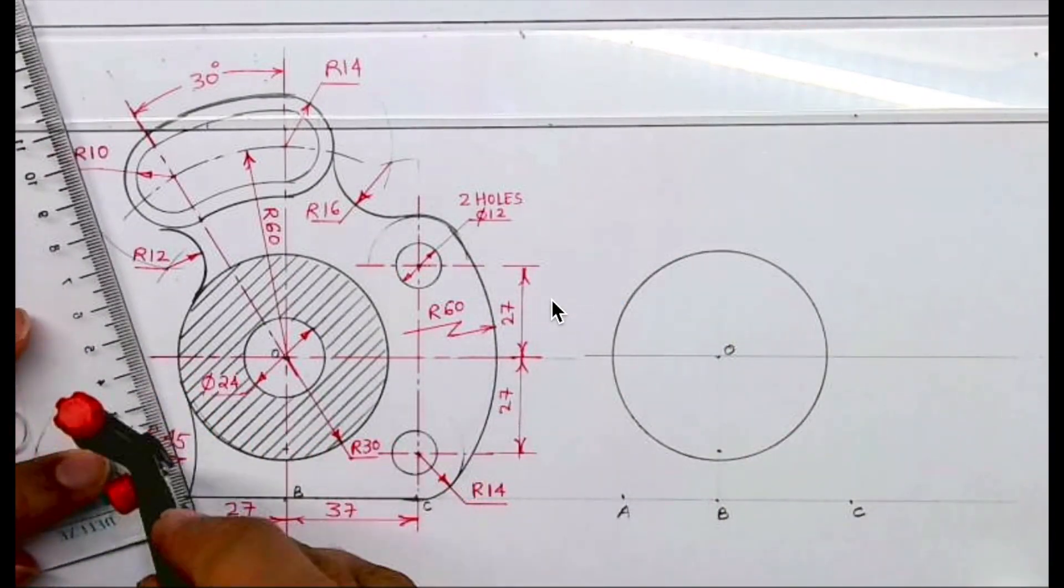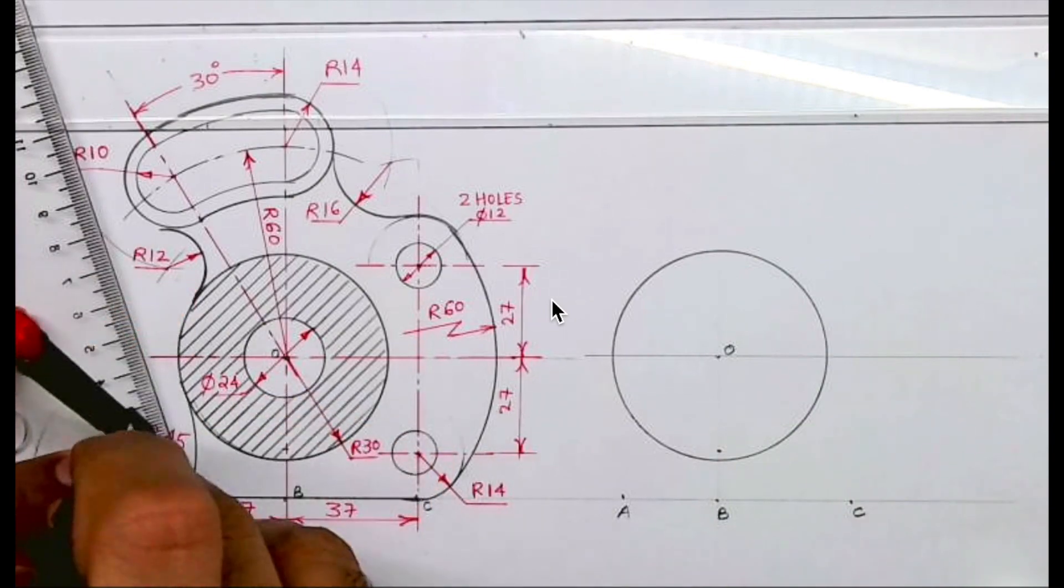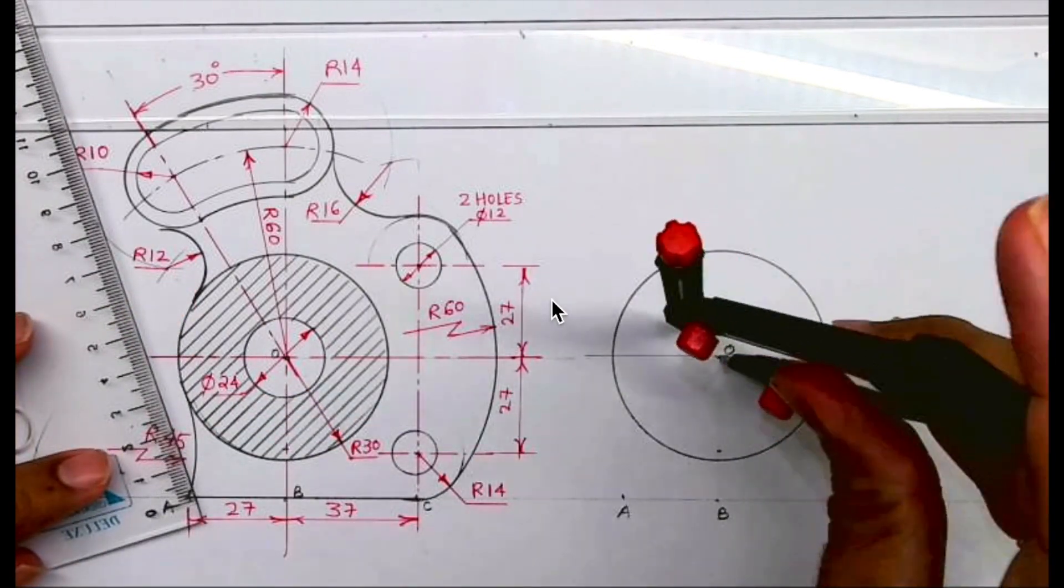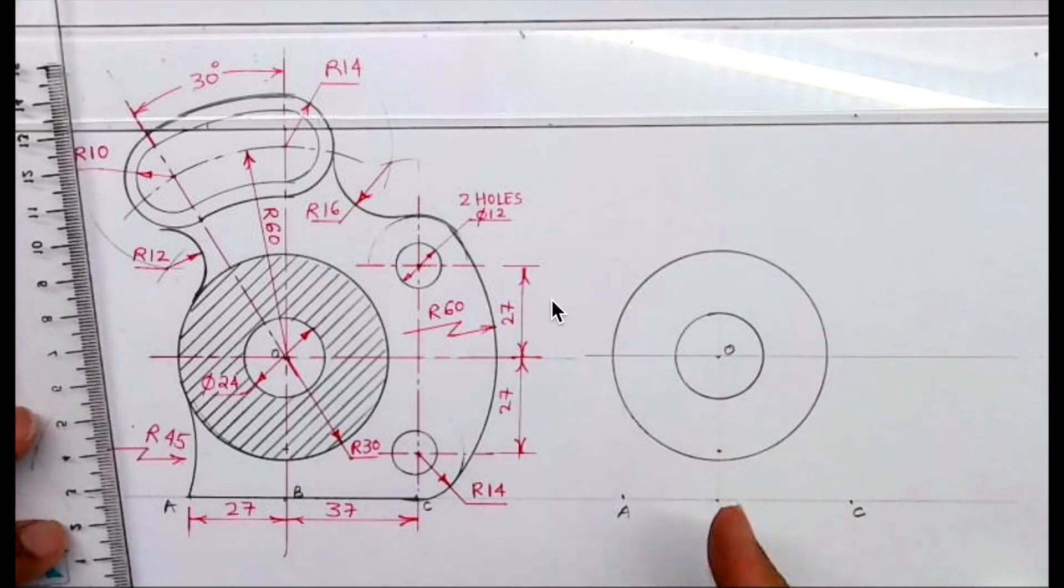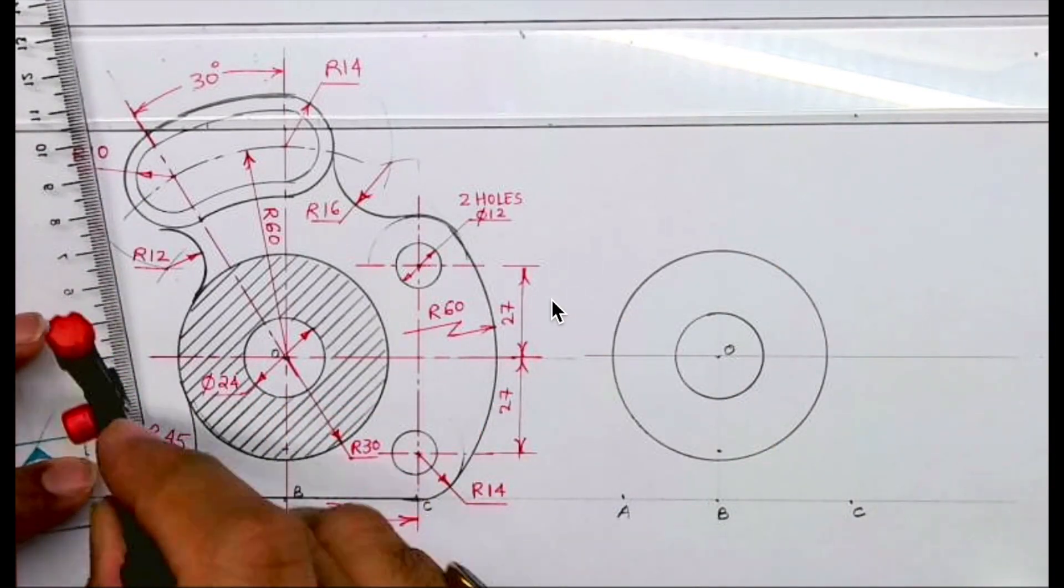Same way from O we can draw radius 12 because we have to draw diameter 24. After that, radius 60.